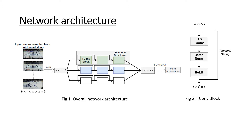I'll talk about the network architecture. The input of the network consists of input frames from an untrimmed video. If there are T number of input frames, these frames are input into a 2D CNN and we obtain T N-dimensional features. These features are input into temporal convolutional towers — each row represents a different temporal convolutional tower. Each tower has a separate receptive field, meaning each tower processes temporal information on different scales. Finally, the activations from these towers are summed up and then softmaxed to obtain the event class probabilities. The temporal convolutional towers are composed of T-con blocks, where each T-con block is composed of a 1D convolution followed by batch norm and then ReLU.